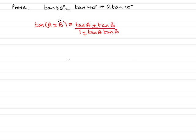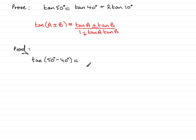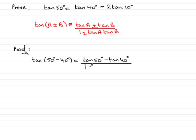So moving on to the proof. I'm going to look first at tan(50° - 40°), which of course equals tan(10°). But using the subtraction formula, this is equal to tan(50°) minus tan(40°), all divided by 1 plus tan(50°) times tan(40°).